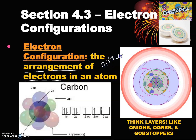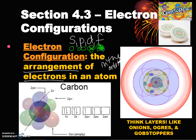In the previous video we went over that there are s, p, d, and f orbitals, and the s, p, d, and f orbitals all have different shapes. They are spherical, dumbbell, double dumbbell, and mega complex — whatever that looks like.